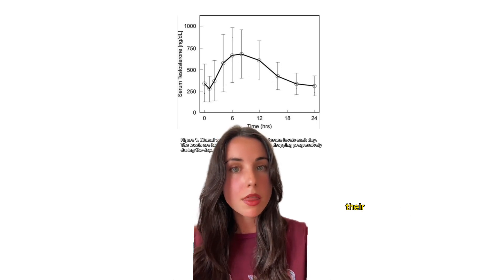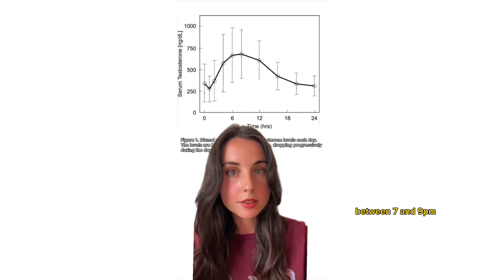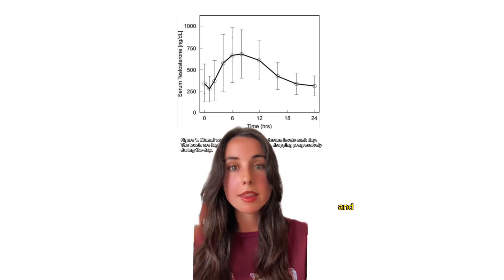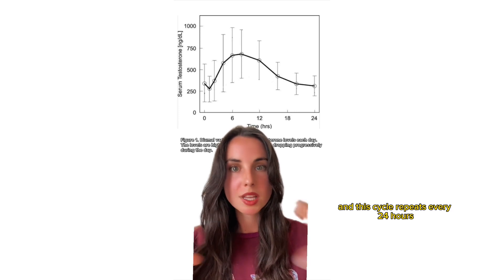And from then on, their testosterone levels decrease, reaching their lowest point between 7 and 9 in the evening. And this cycle repeats every 24 hours. That easy.